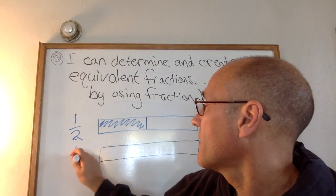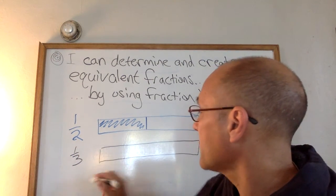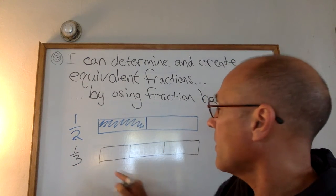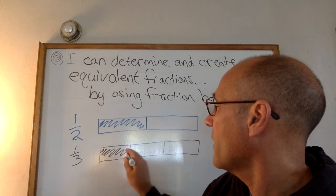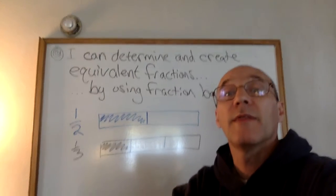One third. The three in the denominator tells me the size pieces are, it takes three to make a whole. The numerator one tells me I have one of them. So that's how I can make a fraction bar for one third.